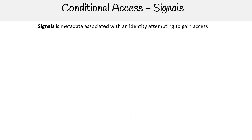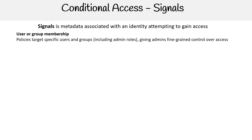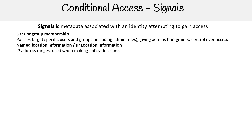Signals is metadata associated with an identity attempting to gain access. Going over the full list of signals possible for conditional access: starting with users or group membership — policies target specific users and groups, including admin roles, giving admins fine-grained control over access. Then you can have signals that are named location or IP location information — that's a range of IPs used when making policy decisions. Admins can opt to block or allow traffic from an entire country's IP ranges.